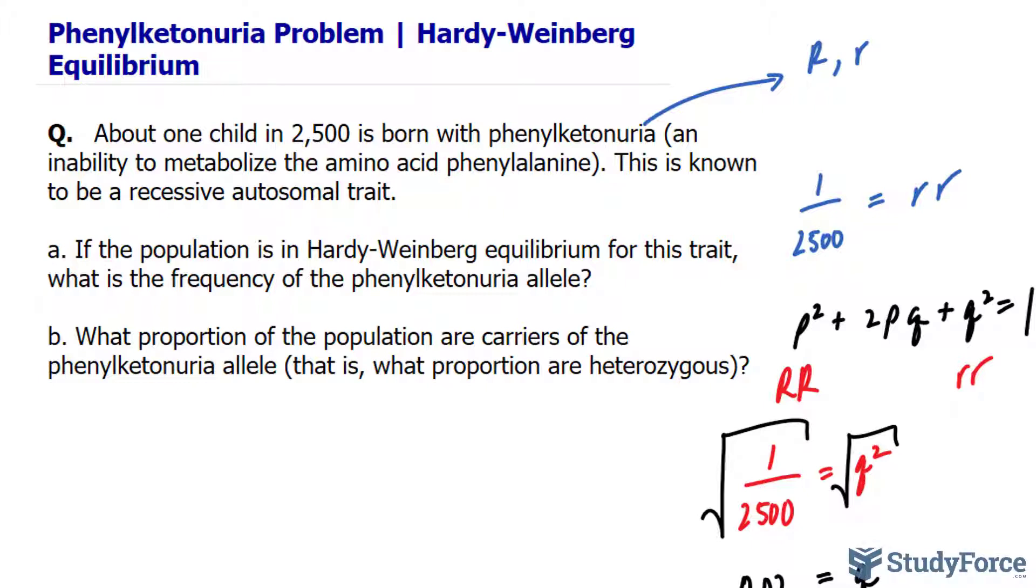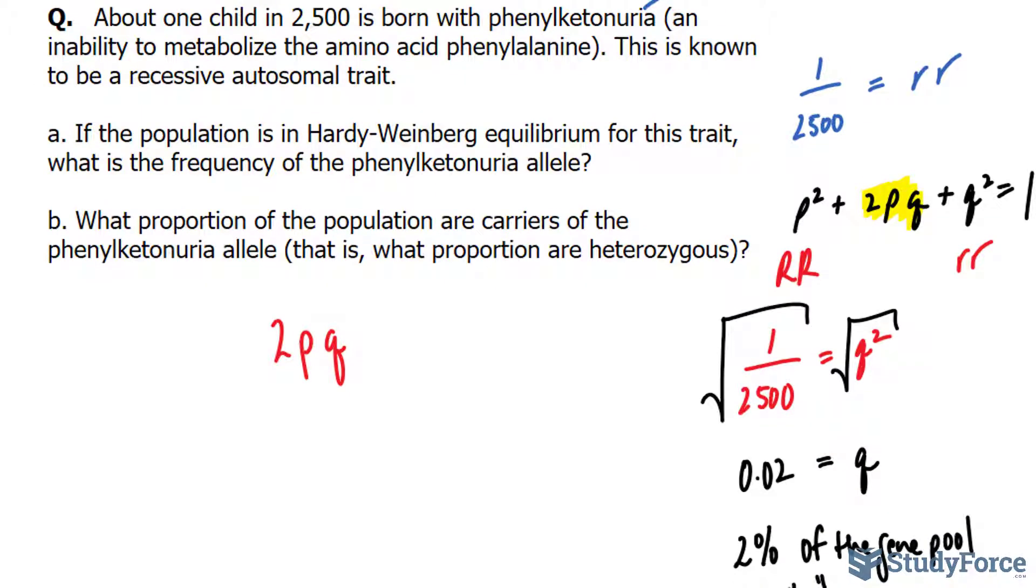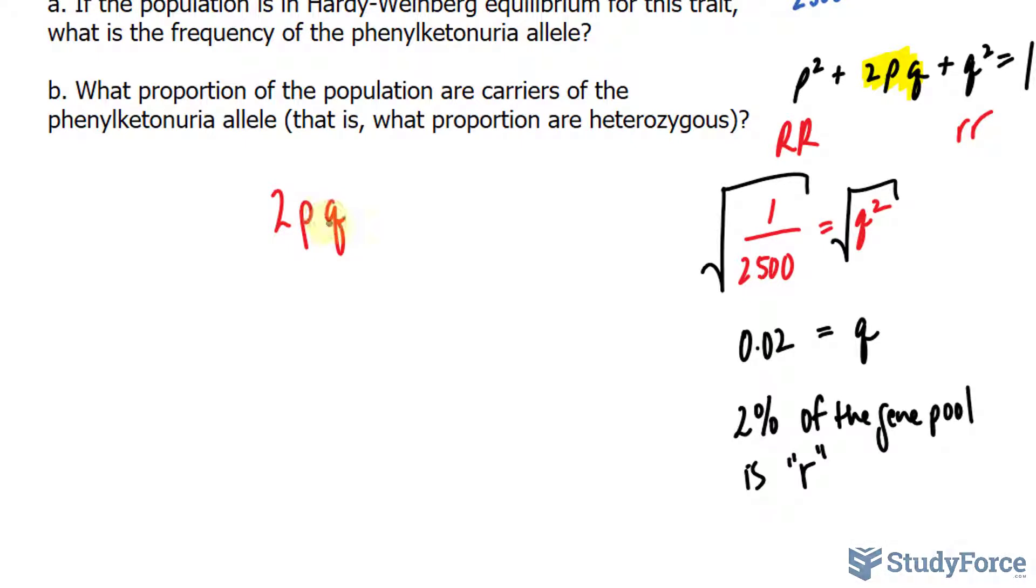And for that, we look to the second term in the Hardy-Weinberg equation, being 2pq. In order for us to calculate the proportion of the population that are heterozygous, we need to know what p and q are. We already know what q is, we solved for it in the previous part, question a.